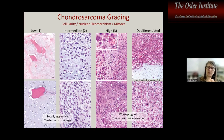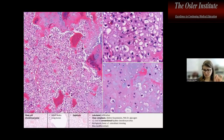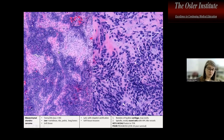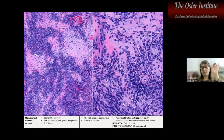Clear cell chondrosarcoma tends to occur in the epiphysis of long bones in adults, with lobulated proliferations of hyaline cartilage islands and morphologically clear cells.